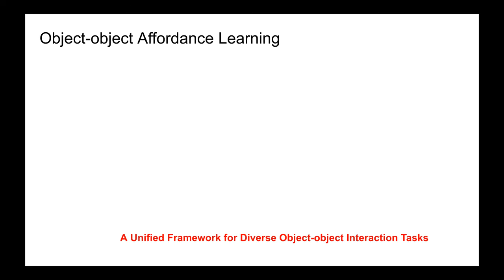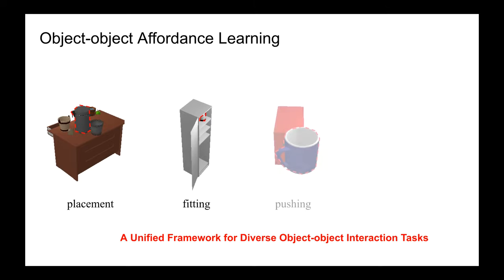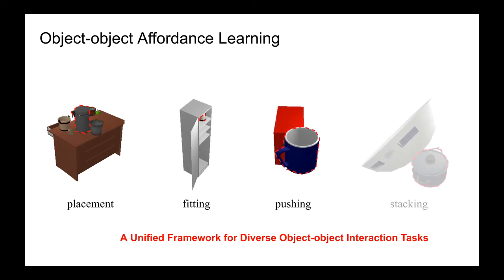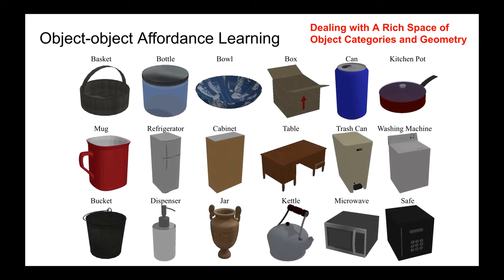There is a rich space of object-to-object interaction scenarios in our daily life, such as placing an object on a messy tabletop, fitting an object inside a cabinet, pushing an object using a tool, stacking an object over another object, etc. There is also a rich space of 3D shapes from different categories, with diverse semantics, rich functionality, and complicated geometry.